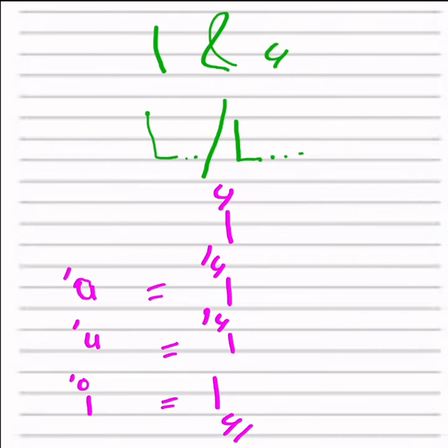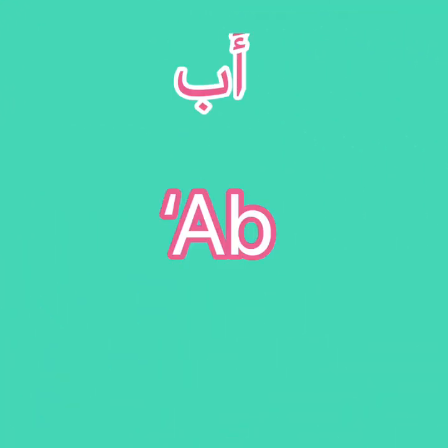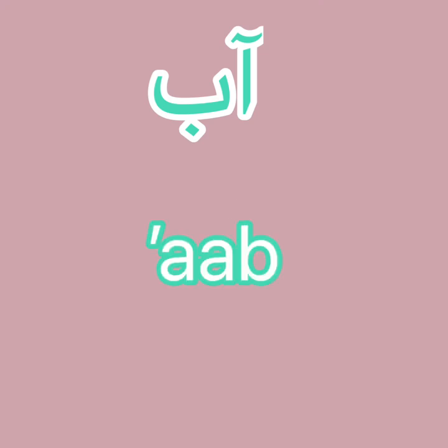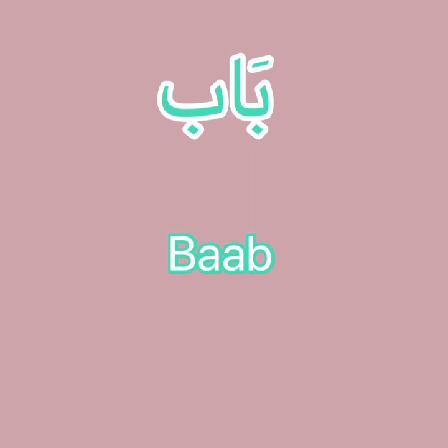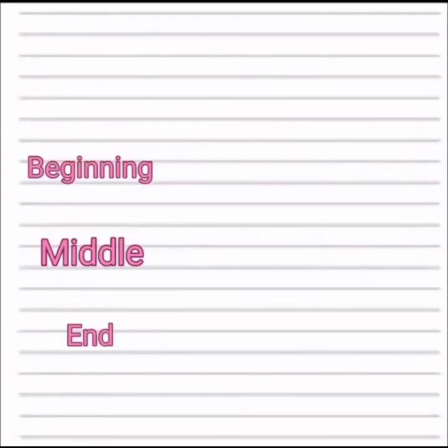Now let's practice reading words with the letter Alif. First word: Alif-Ba — 'ab,' which means 'father.' Second word uses a different type of alif — if you haven't recognized it, please check the linked video in the description. It is 'ab,' meaning 'August,' the month. Third word: Alif-Noon-Alif Madd — 'ana,' meaning 'me.' Fourth and last word: Ba-Alif Madd-Ba — 'bab,' meaning 'door.'